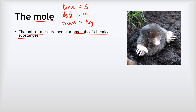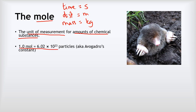What that means is if we've got the same number of moles of two different substances, we've got the same amount of each of those substances. We define it like this: one mole is equal to 6.02 times 10 to the 23 particles of a substance. We call that number Avogadro's constant, and that is something you'd be expected to remember — it's a 6 with 23 digits after it.